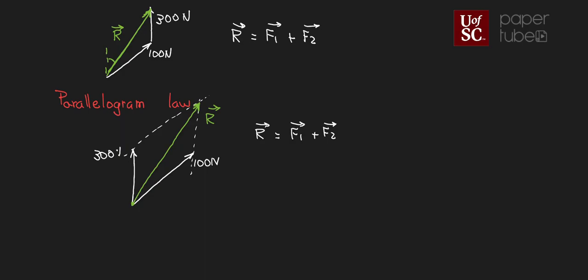In summary, vectors and scalars are different: vectors have a magnitude, direction, and in most cases units. To add vectors we cannot simply add the magnitudes — we must also consider direction. To do that we can use either the heads-to-tails method or the parallelogram law.